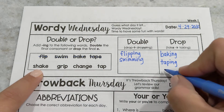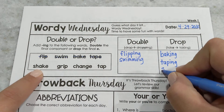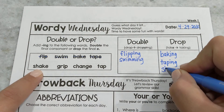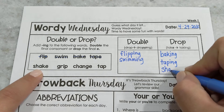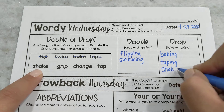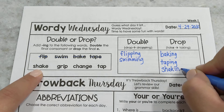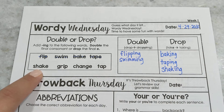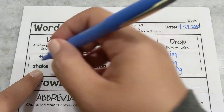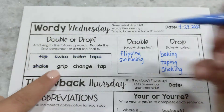What's this word? Shake. Shake. If I add -ing, I've got to get rid of the e. That word becomes shaking.